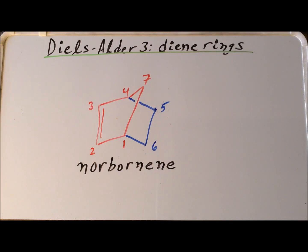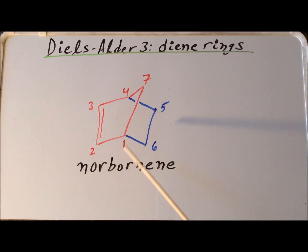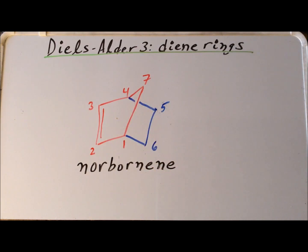If our diene is cyclopentadiene, sometimes abbreviated as CP, and it reacts with ethylene, our product is a bicyclic ring system which goes by the trivial name of norbornene. It has a specific numbering system where certain carbons, specifically carbons 1 and 4, belong to both rings, so we call them bridgehead carbons.